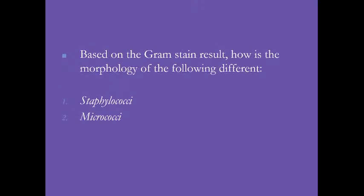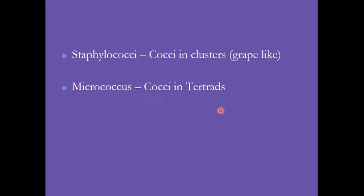Based on Gram stain results, how is the morphology of staphylococcus and micrococcus different? This is traditional morphology. Cocci in clusters or grape-like arrangements indicate staphylococci. Micrococcus, on the other hand, is arranged in tetrads.